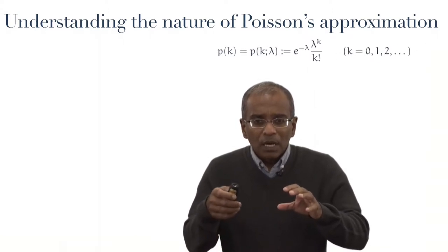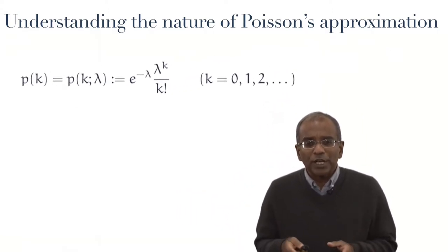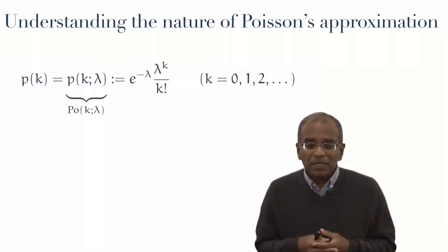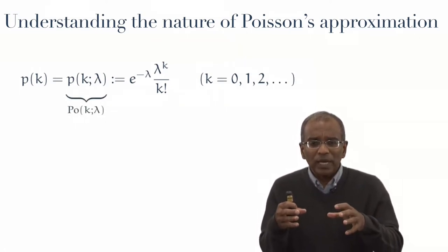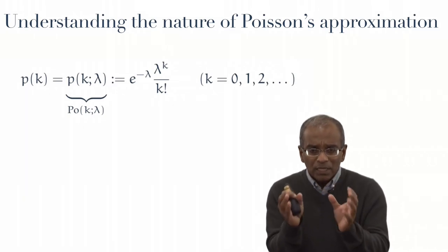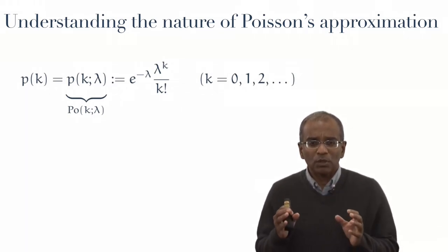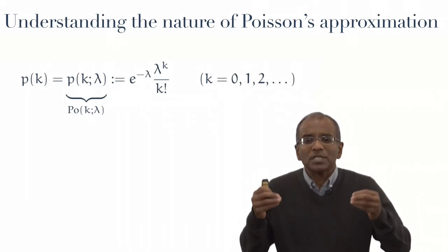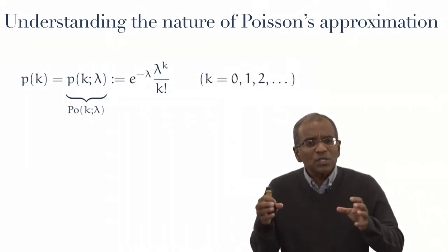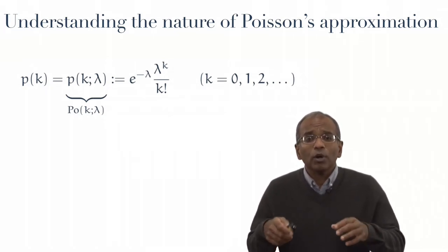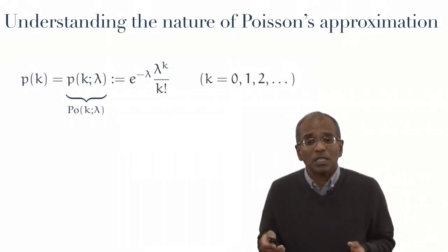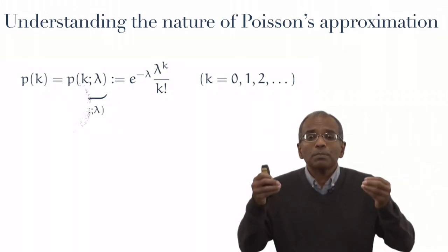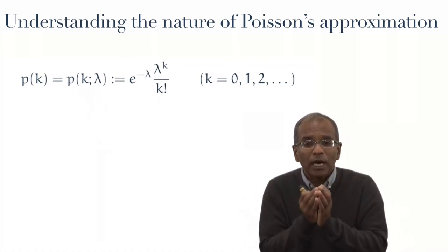Now, in our more formal, elaborate notation, this is what we called in the previous slides P_0 of k and lambda. But now that we are dealing in the context purely of the Poisson, and without the parameter p to confuse as a possible success probability, we will dispense with the more elaborate notation and, reverting to our notation for mass functions, write simply P of k or P of k and lambda to denote a particular mass function of the Poisson kind.